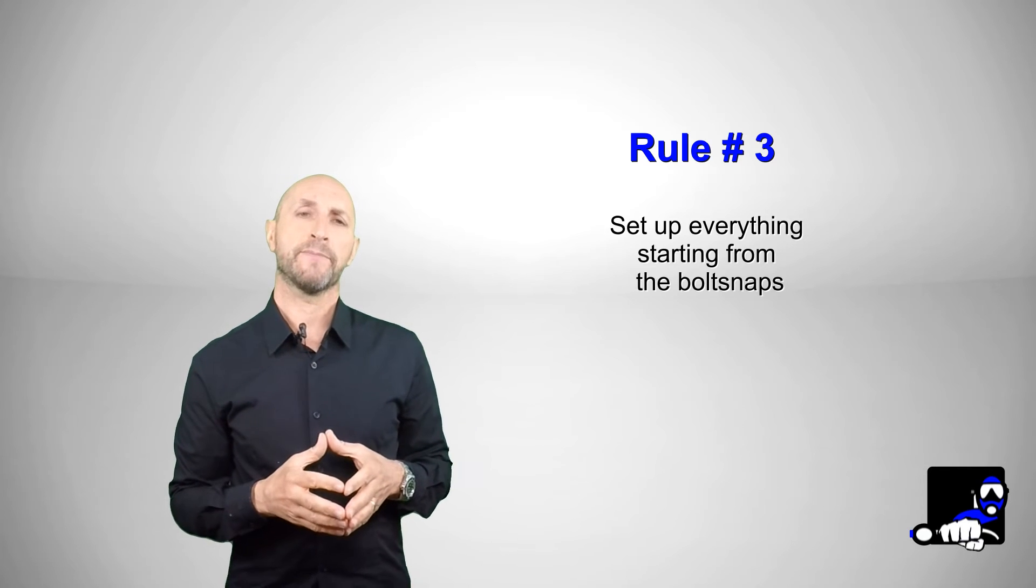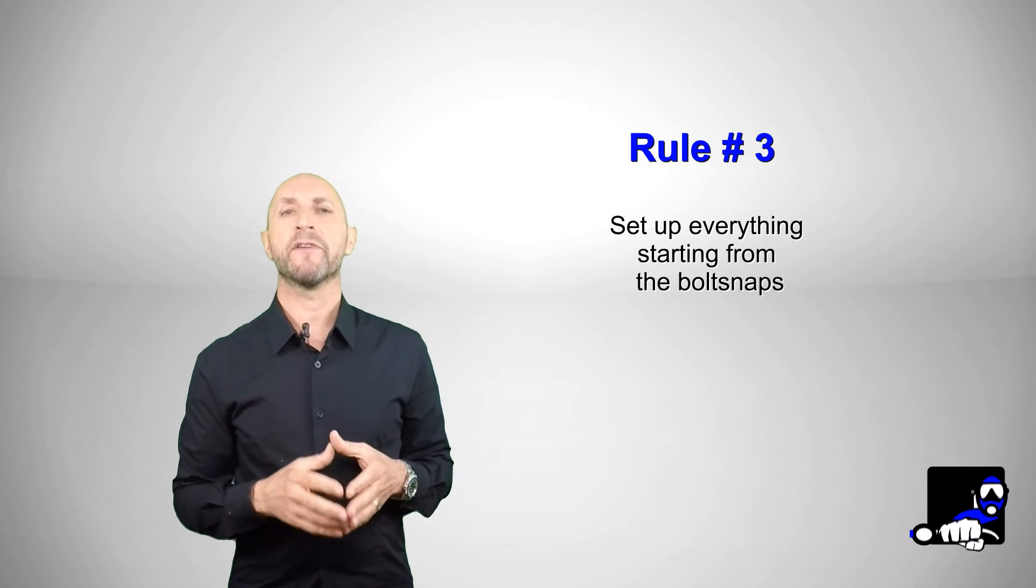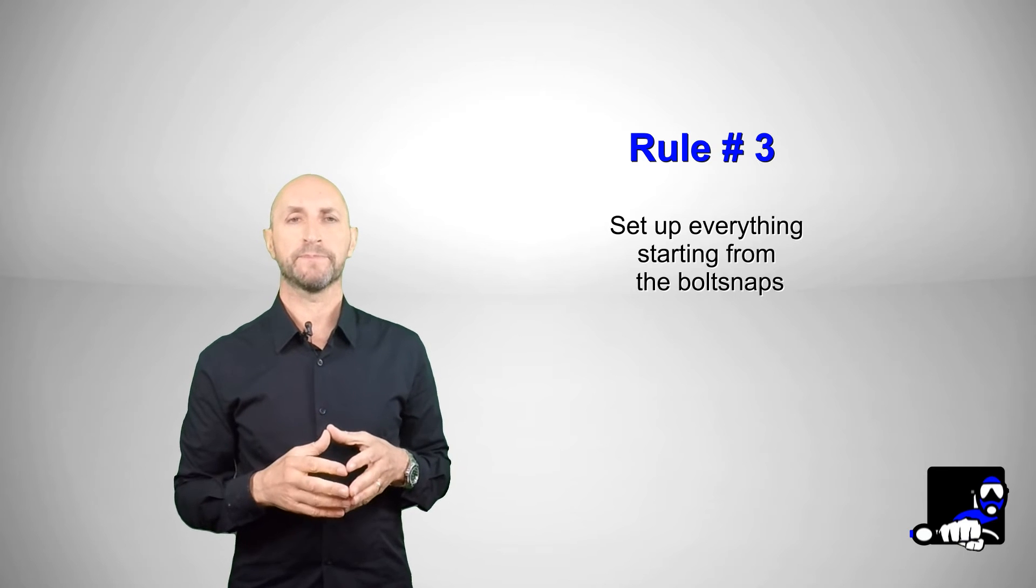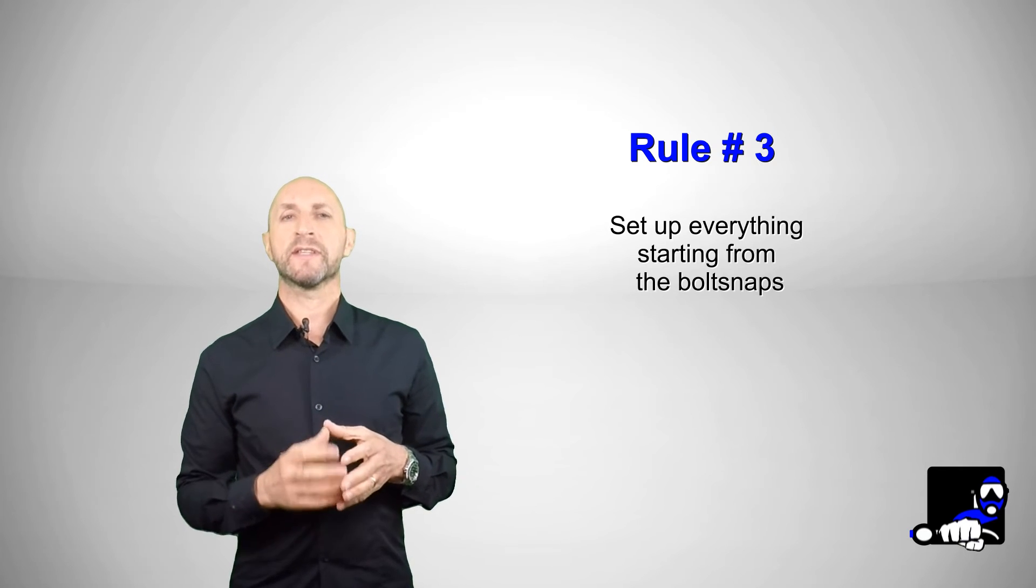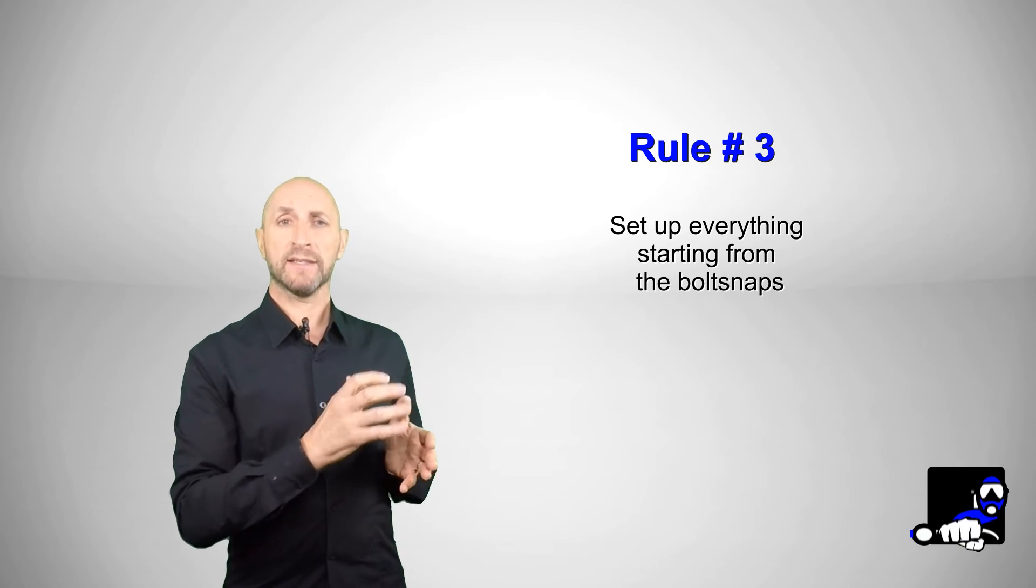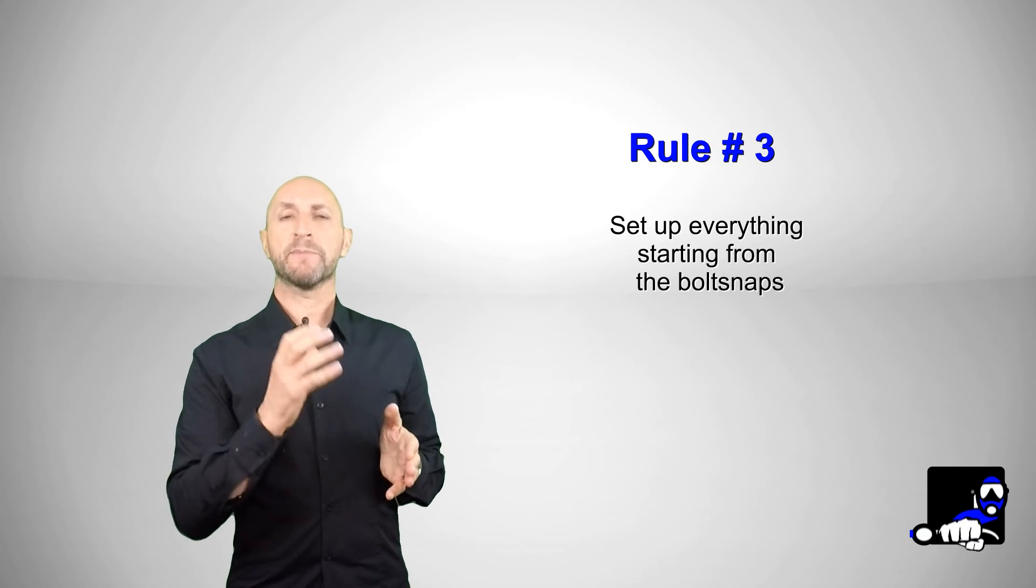The third rule says: set up everything starting from the bolt snap. When you're going to set up your regulator on the tank, you have to start by clipping the bolt snap of the long hose on the right shoulder D-ring, then the SPG bolt snap, and then you can mount the first stage.